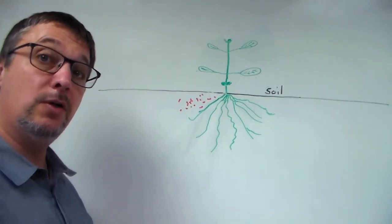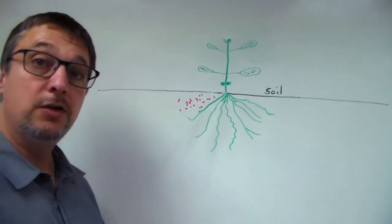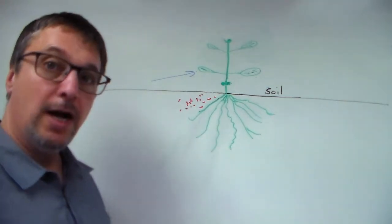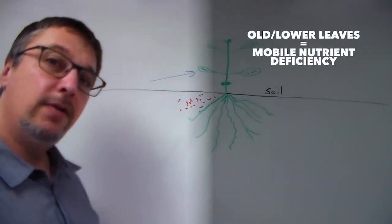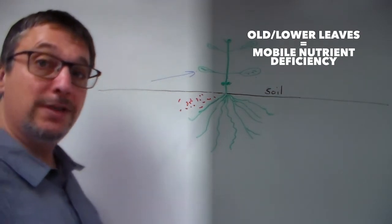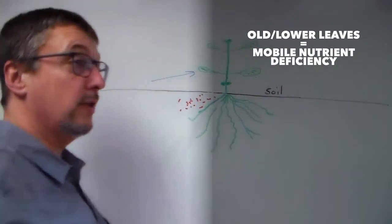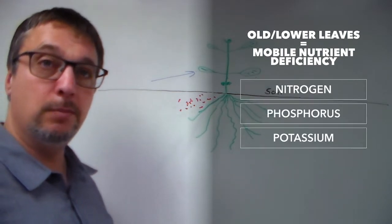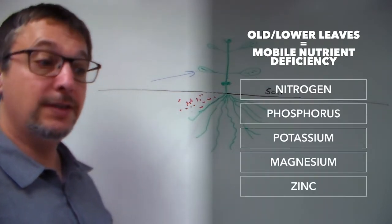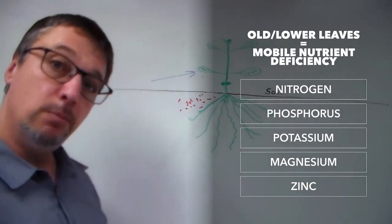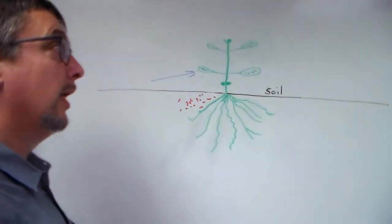Once the pH is okay, you want to look where on the plant you're seeing the problem. If you notice it is the lower leaves that are yellowing or having problems, that means you have a mobile nutrient deficiency. Certain nutrients are mobile, what that means is they can move around in the plant. Nutrients like nitrogen, phosphorus, potassium, magnesium, zinc, these are mobile nutrients. So when you see problems in the lower leaves, that's a mobile nutrient deficiency.